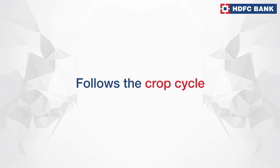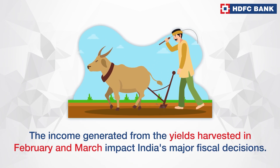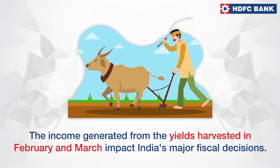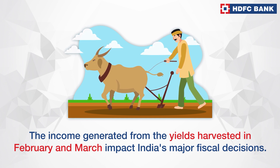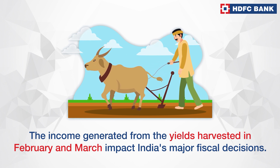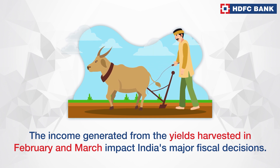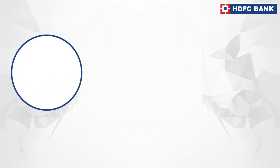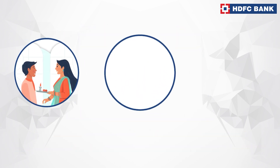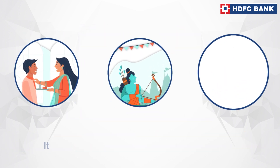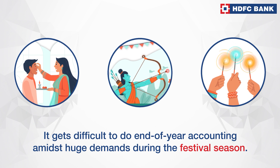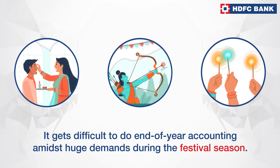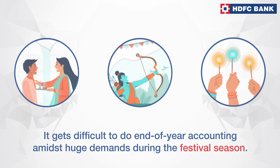Follows the crop cycle: India's primary income depends on agriculture. The income is calculated based on an estimate of the yields harvested in February and March. The time of October to December is crucial due to the festival season, making it difficult to conduct end-of-year accounting.